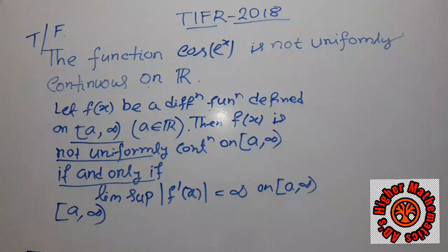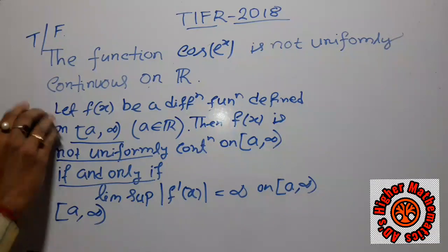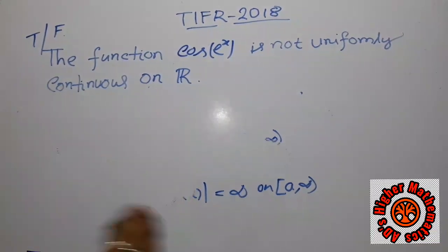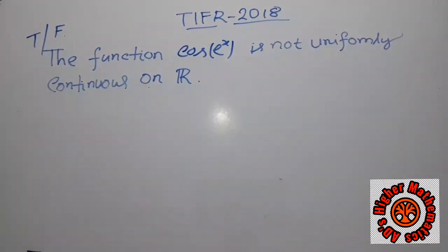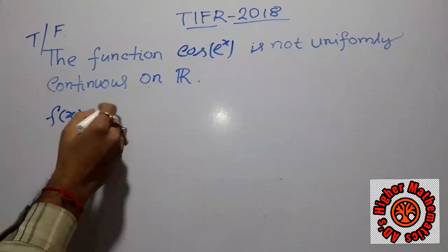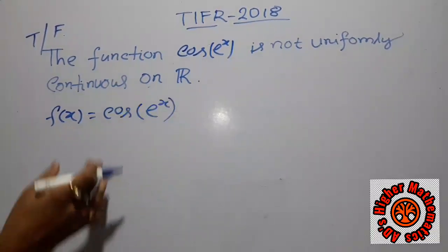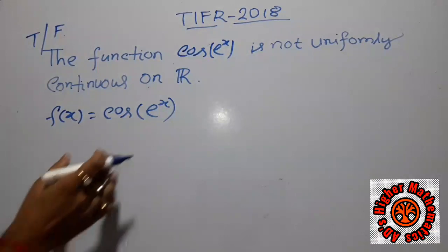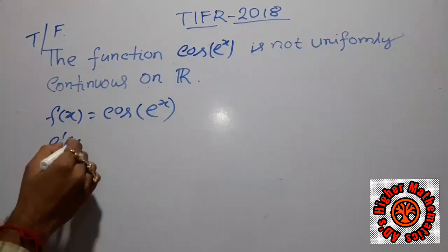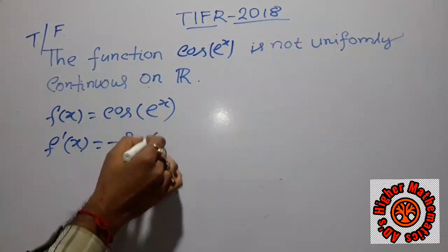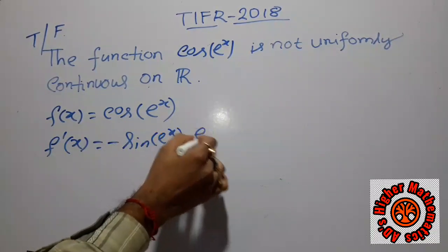Now I use this lemma to solve the problem asked in TIFR 2018. The given function is f(x) = cos(eˣ). We can easily see that this function is differentiable, and differentiating with respect to x we get f'(x) = -sin(eˣ) · eˣ.